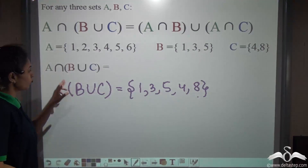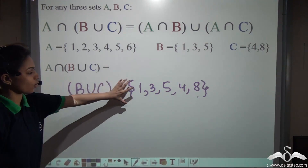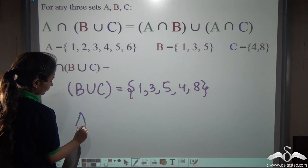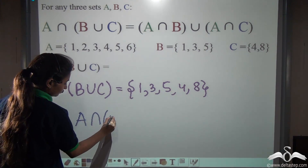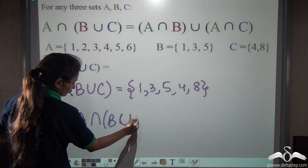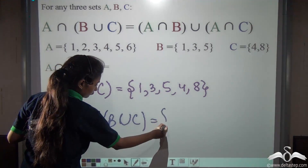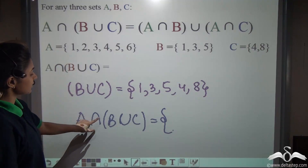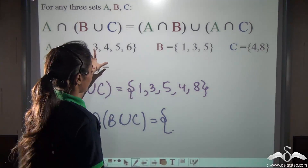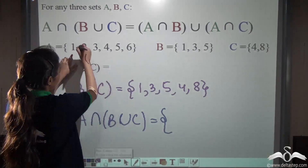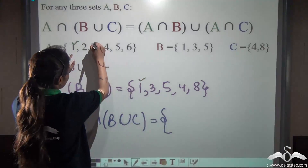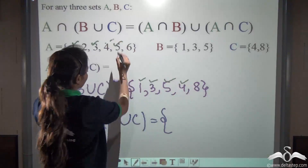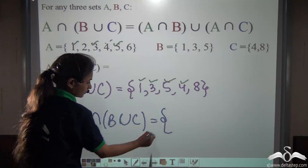Now what do we have to do? We have to intersect this whole set with set A. Tell me the answer. Intersecting this set with set A, what elements do I see common? 1, 3, 5, 4. So let me write this: we get 1, 3, 4 and 5.